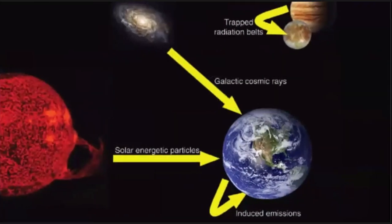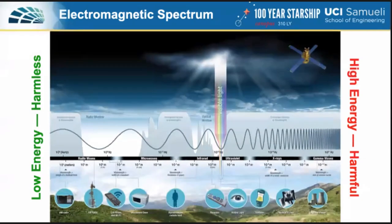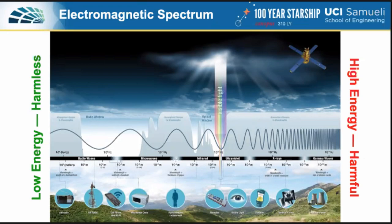So right now, we contend with radiation generally from these sources. But in interstellar space, we're really only going to be concerned about galactic cosmic rays. Most of us are probably familiar with the electromagnetic spectrum — radio waves over here are harmless, and X-rays and gamma rays over here have a higher energy and are a form of ionizing radiation.